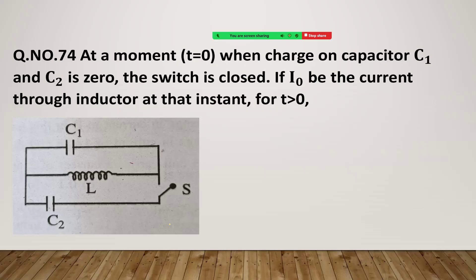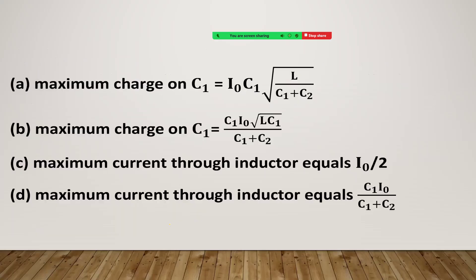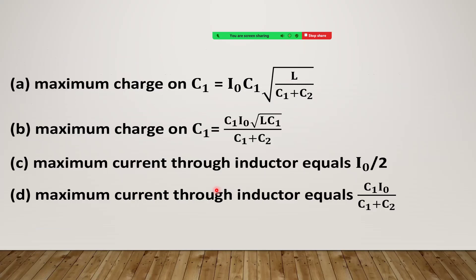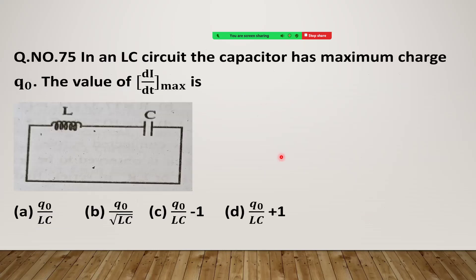The correct option is A: charge on C1 equals I0 times C1 times square root of L by (C1 plus C2).